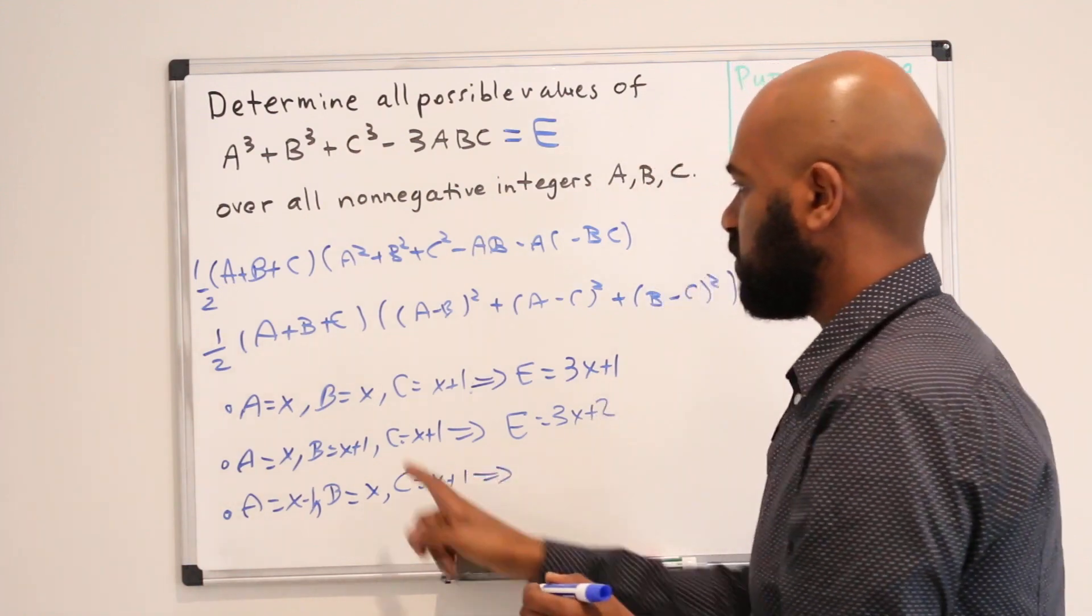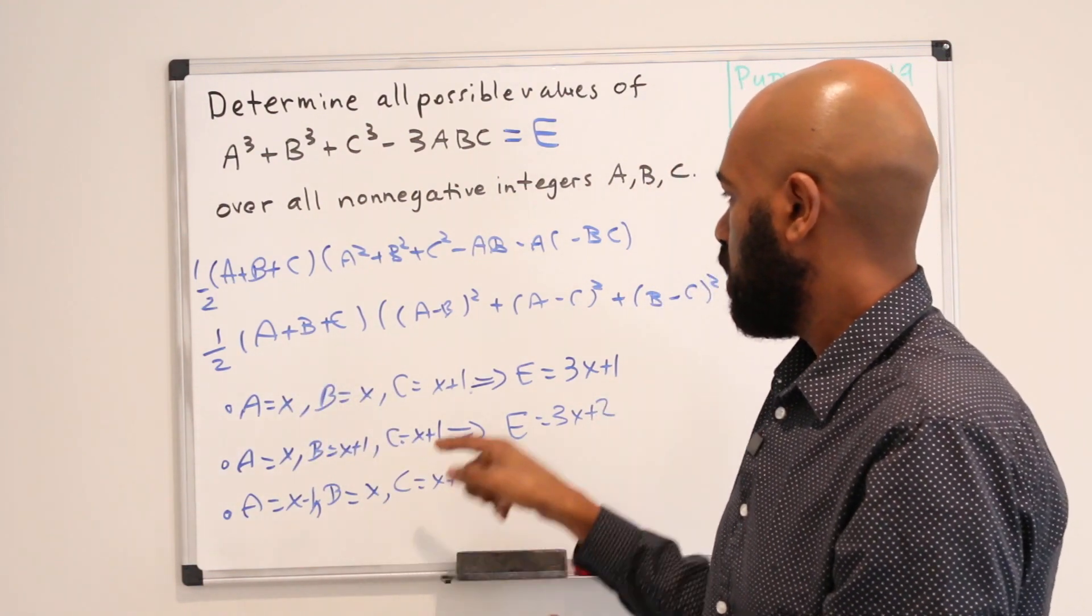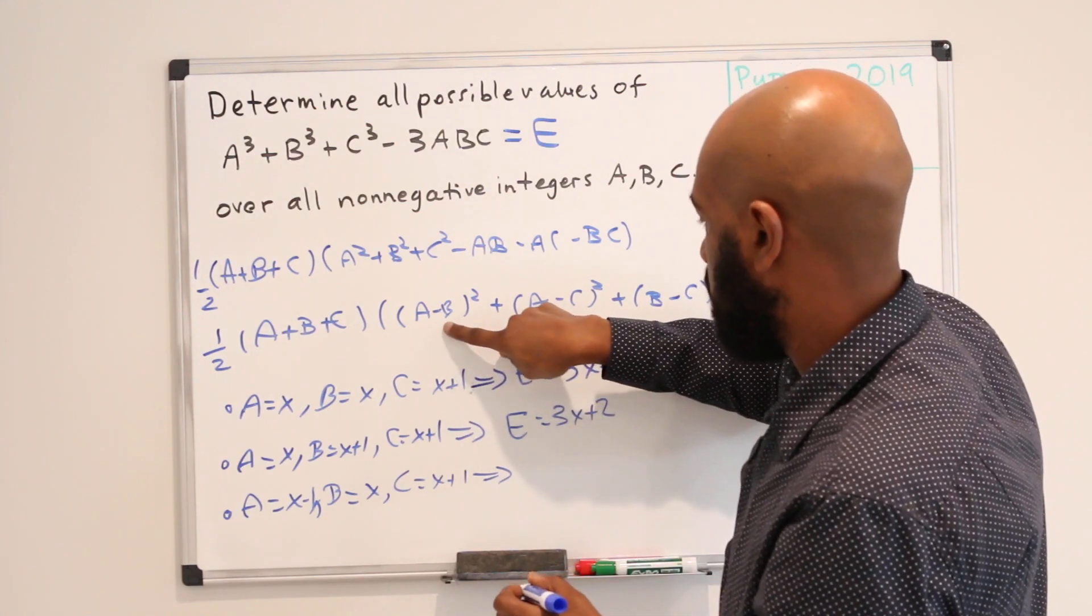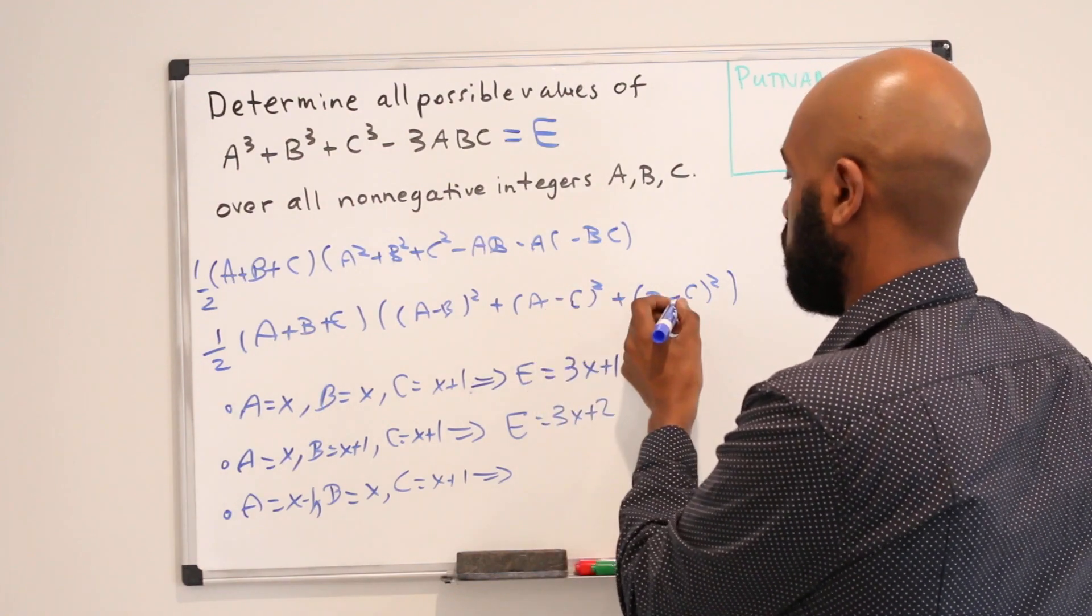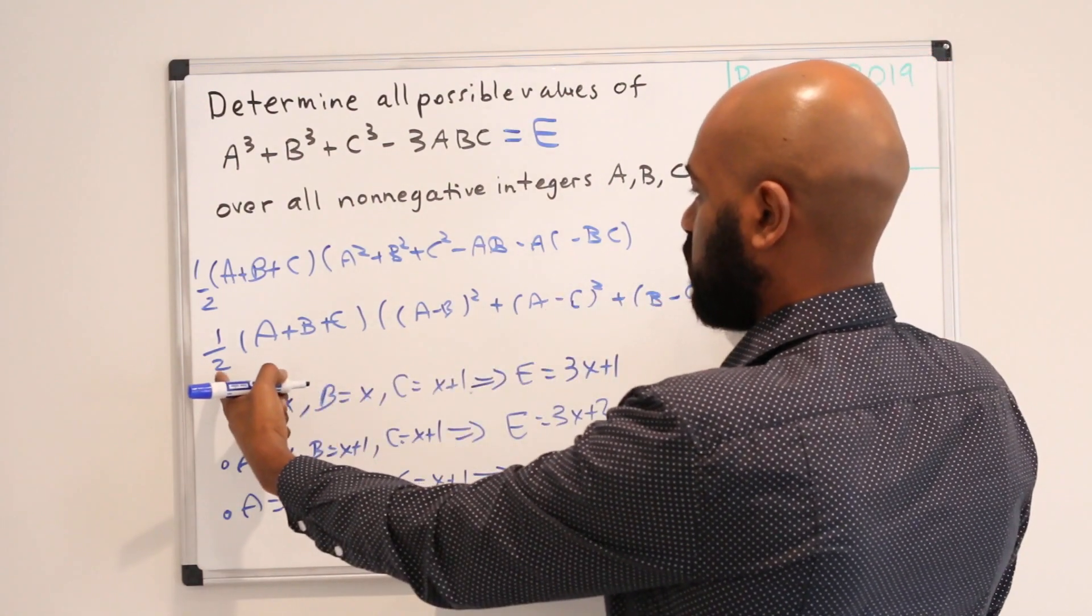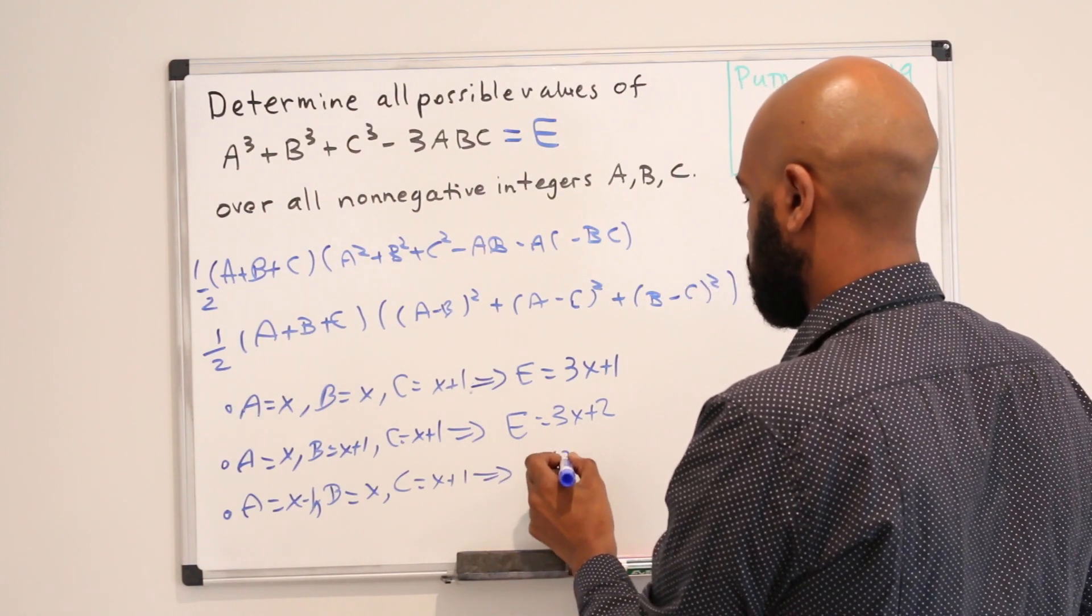Right now if we do that, this expression here is the sum of these which is 3X. And here we'll have 1², 2², and 1² which is 6. Divide these two, you get 3. So we'll have 3 times 3X, which is 9X.